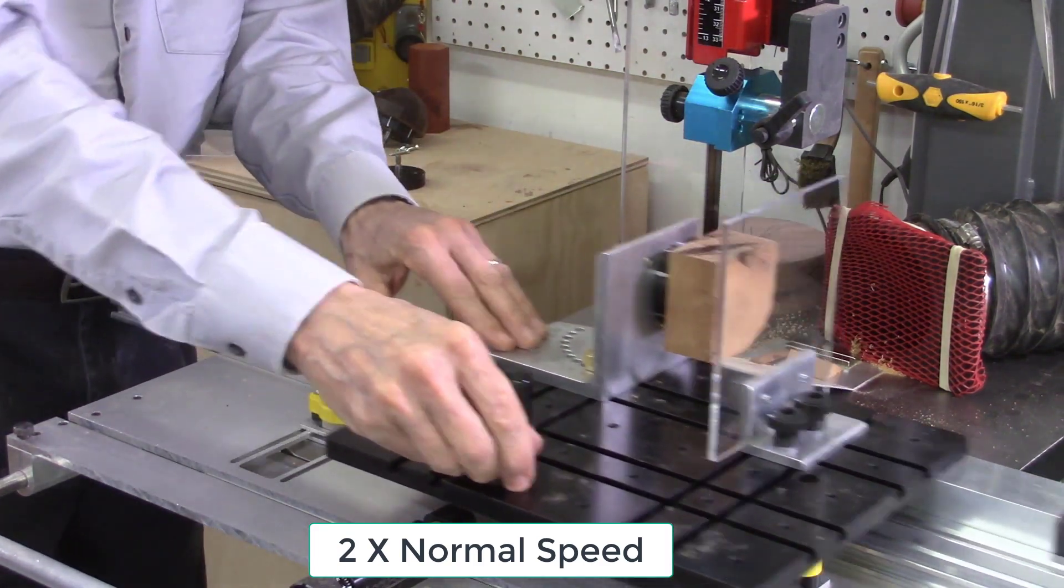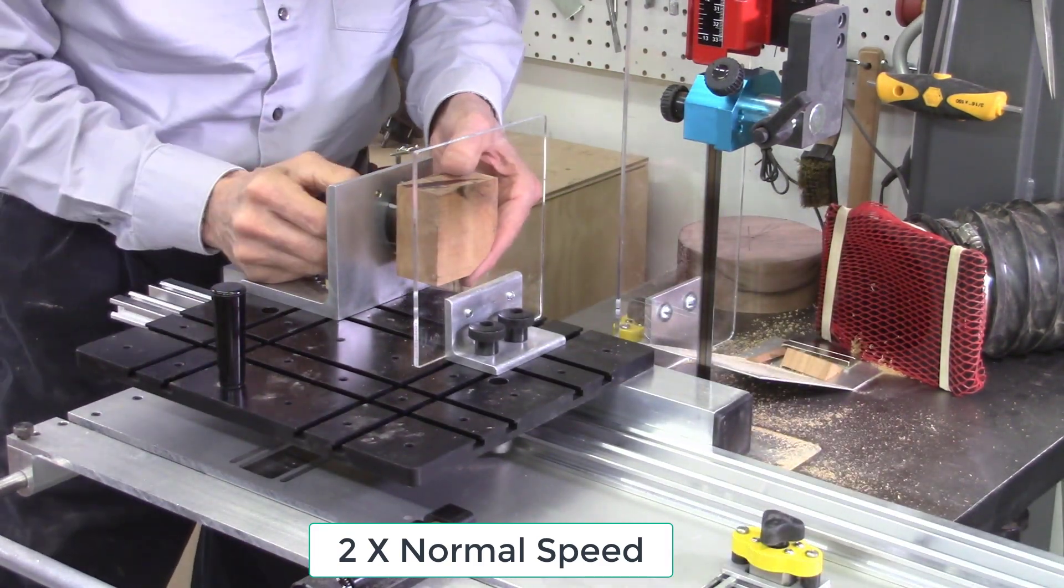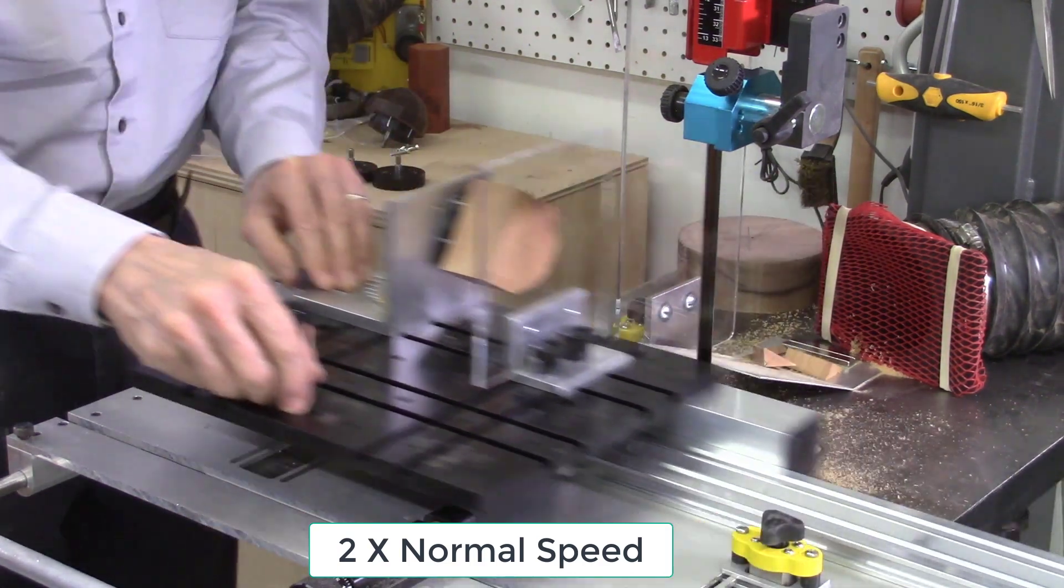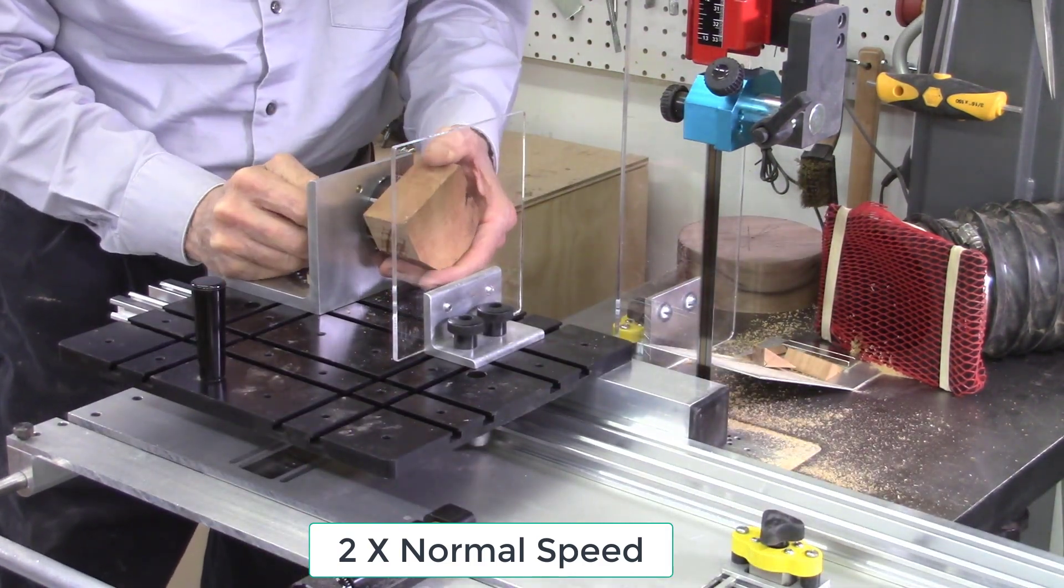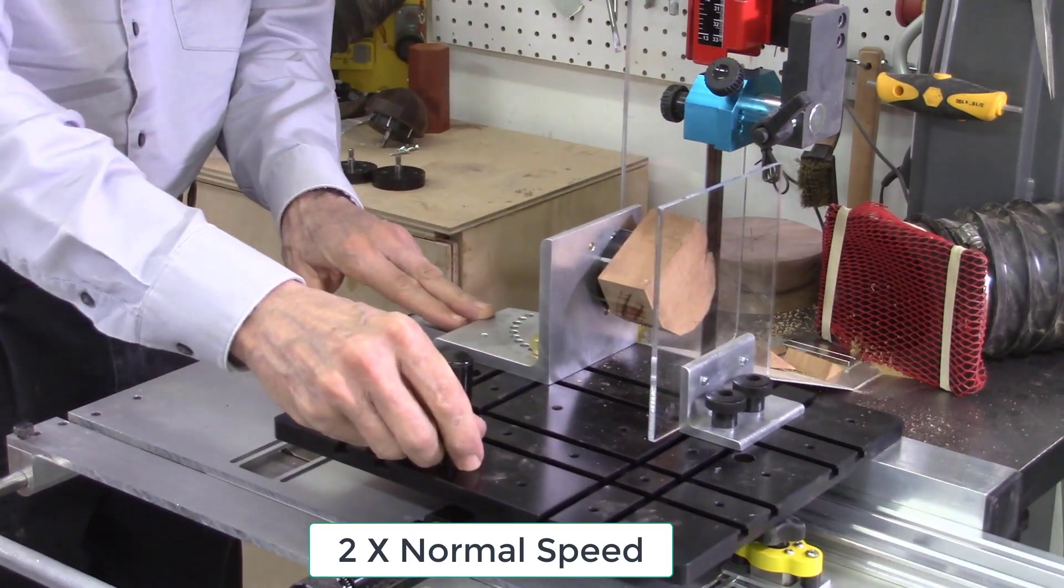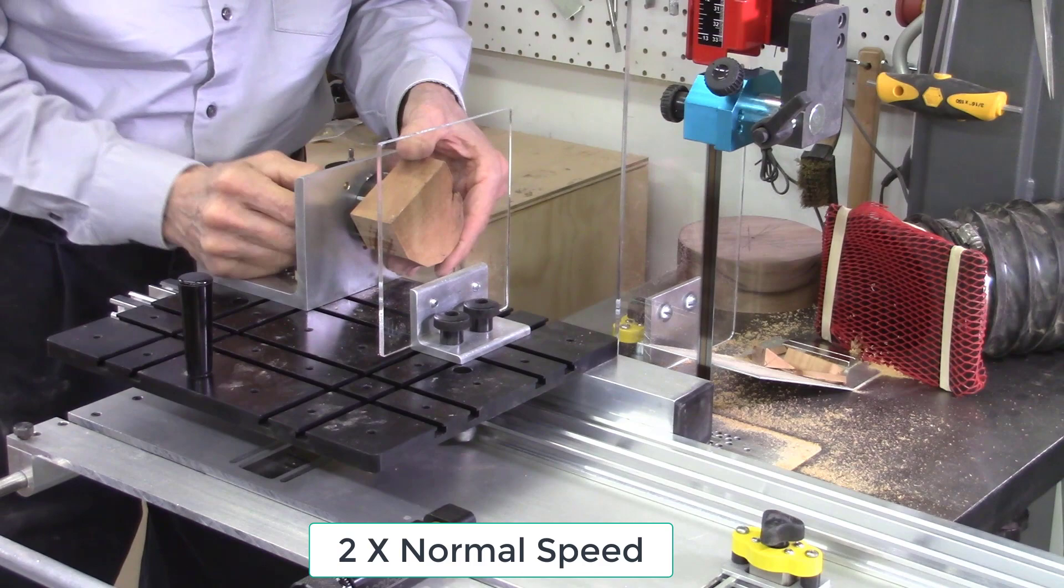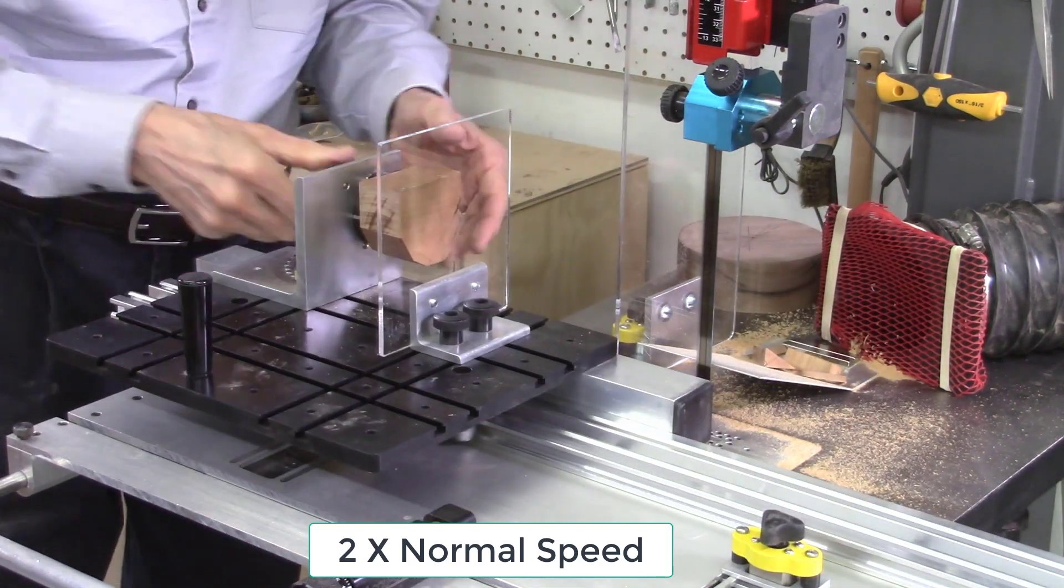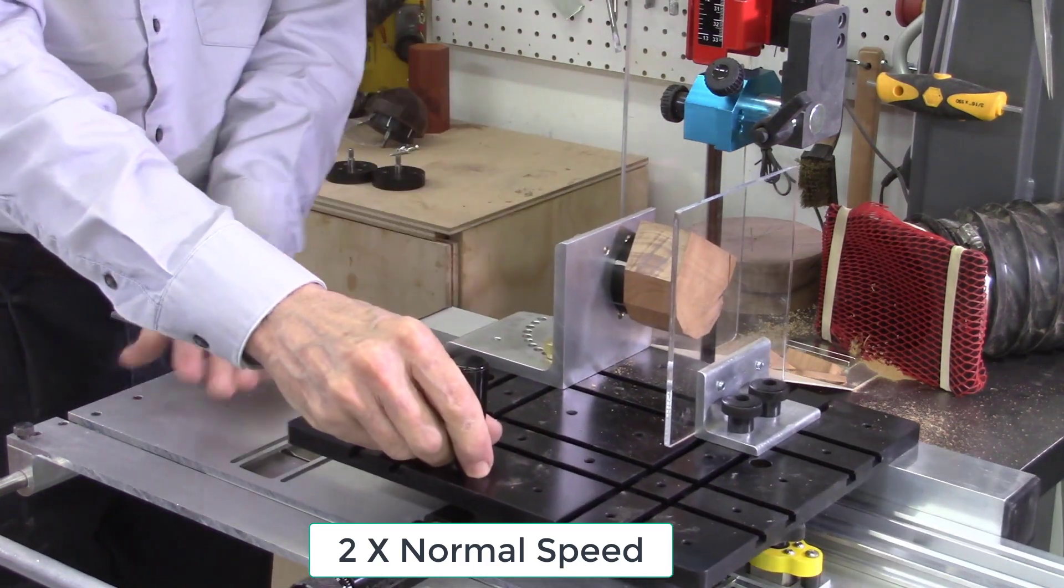After turning on the bandsaw and the additional vacuum system, I start to pass the sled through the bandsaw blade. I use the handle on the AccuSled to move the sled with the wood block attached. After the cut is finished, I pull the sled back so that the safety shield on the AccuSled is in front of the bandsaw blade.